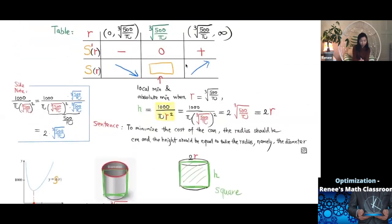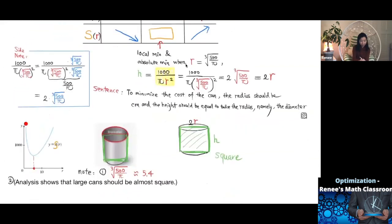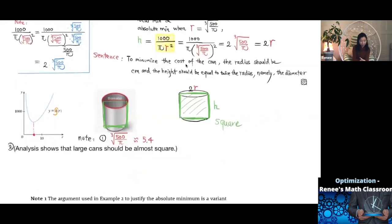If you graph the surface area function, the graph confirms this. Between 0 and 10, the minimum occurs at approximately R ≈ 5.4, which corresponds to R = ∛(500/π). At that point, the surface area is at its minimum.